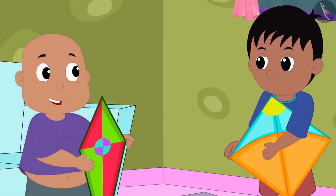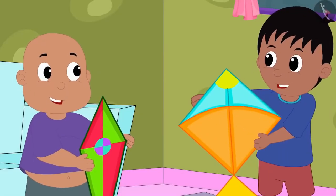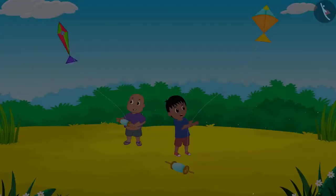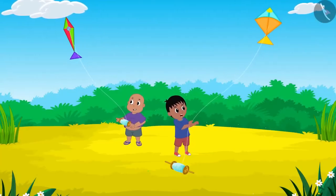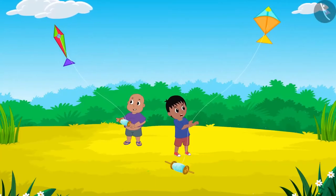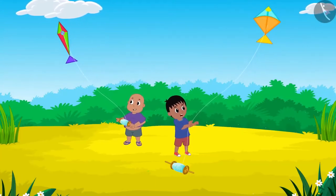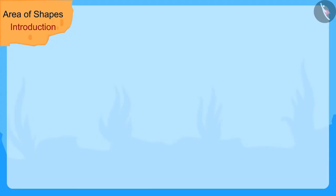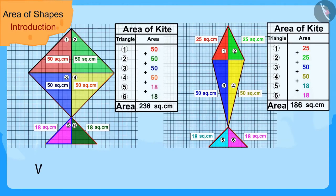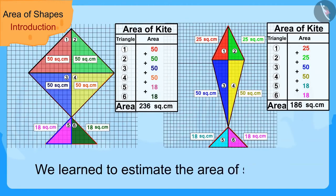Let us go to the playground and fly our kites. Raju said to Bablu and the two friends went to the playground to fly their kites. Children, in this video we learned to estimate the area of shapes. In the next video, we will learn more about it through some interesting examples.